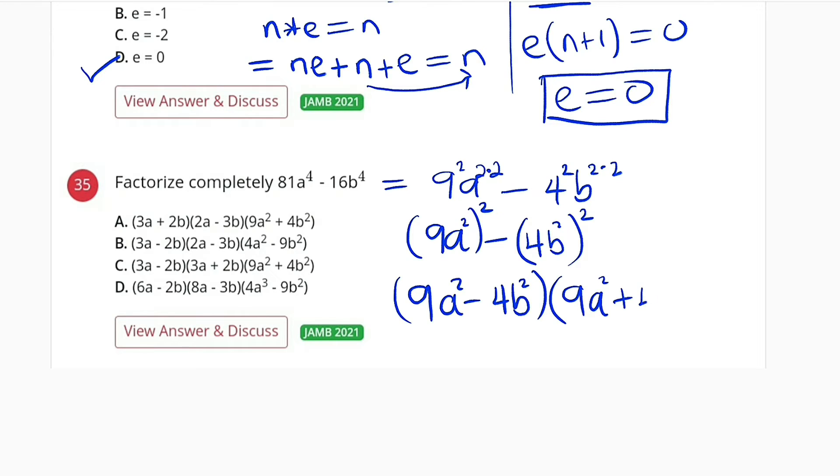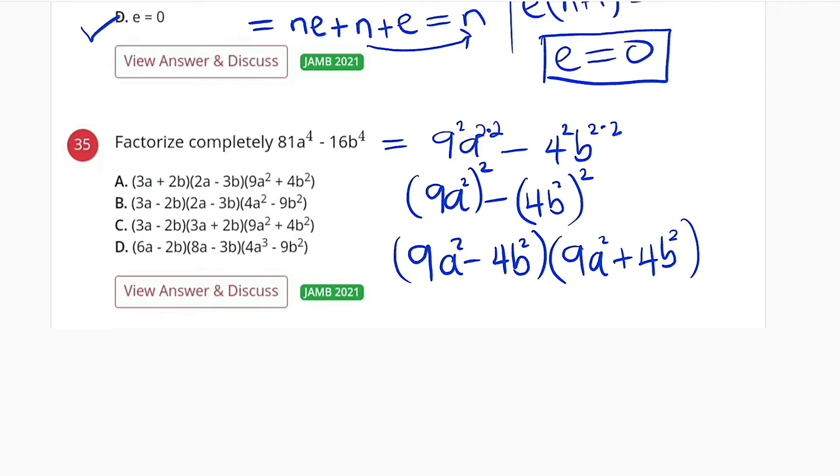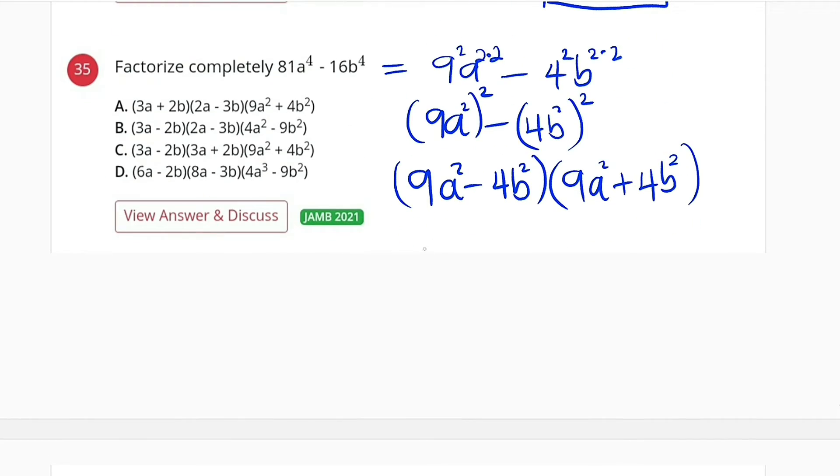The only difference is the sign 4b squared. From the left-hand side, 9 can be written as 3 squared and we still have a squared, minus 4 can be written as 2 squared, we still have b squared.